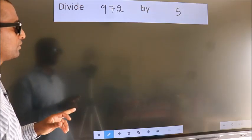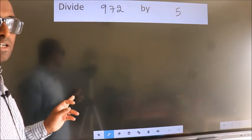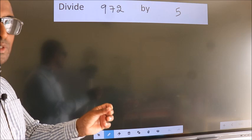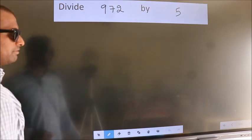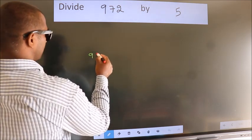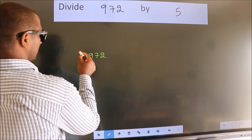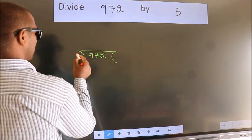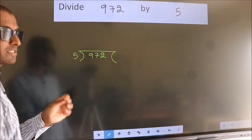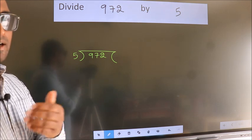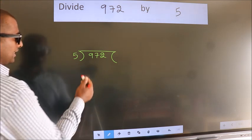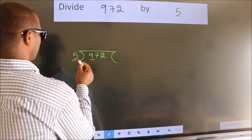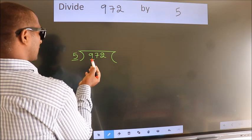Divide 972 by 5. To do this division, we should frame it in this way: 972 here, 5 here. This is your step one. Next, here we have nine. A number close to nine in five table is...